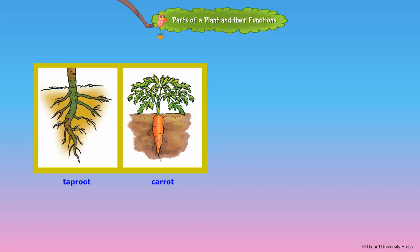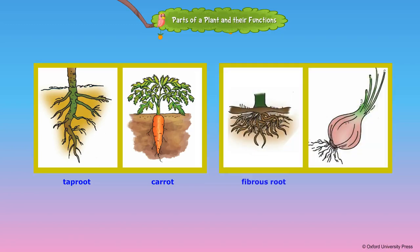When a number of roots grow from the end of the stem, they are said to be fibrous roots. Onion, grass and rice have fibrous roots.